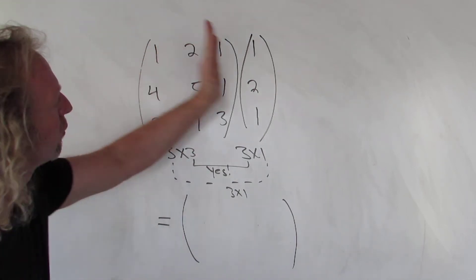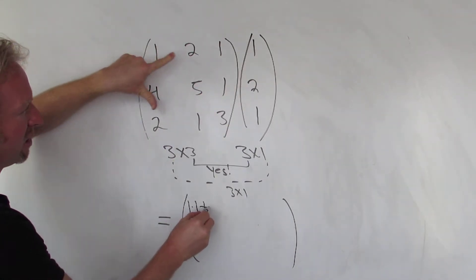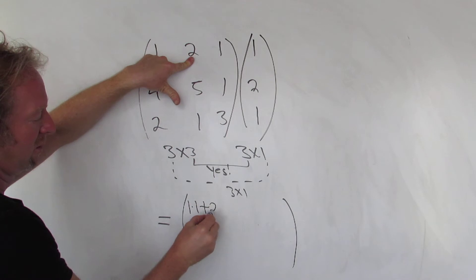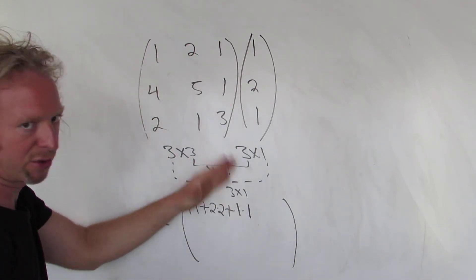So we use the first row, first column. So it's 1 times 1, plus 2 times 2, plus 1 times 1. So that's the first row, first column.